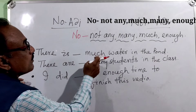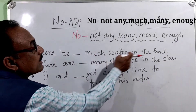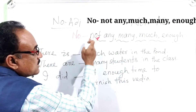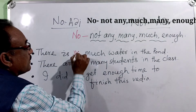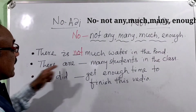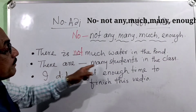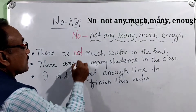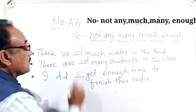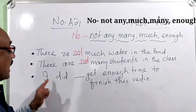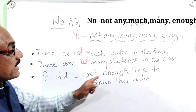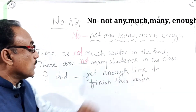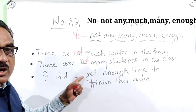There is not much water in the corner — 'much' takes 'not.' There are not many students in the class — 'many' takes 'not.' I did not get enough time to finish this video — 'not' is used here as well.